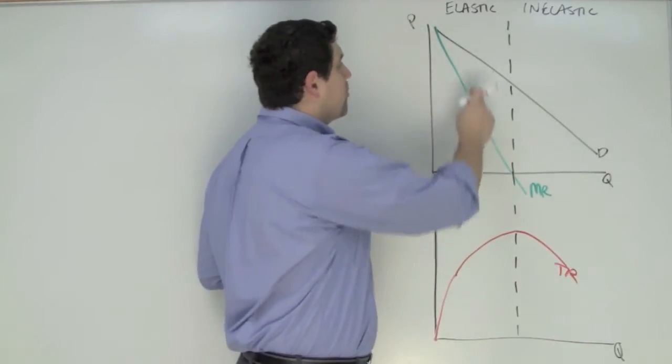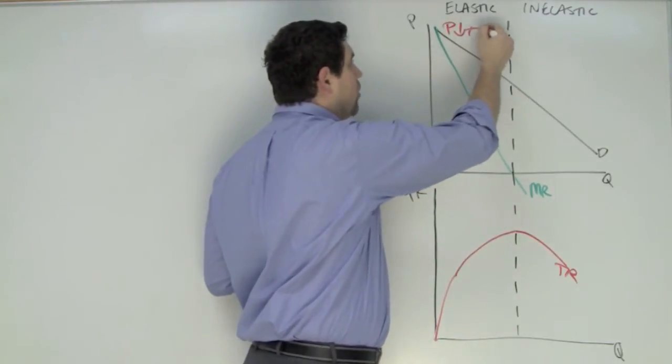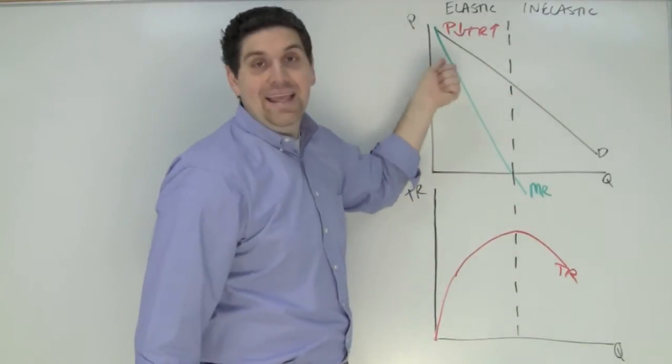You look at this quantity right here, the price is going down but the total revenue is going up. So if the price goes down and the total revenue goes up this must be the elastic range.